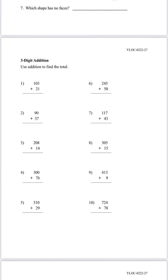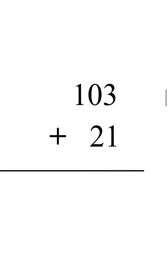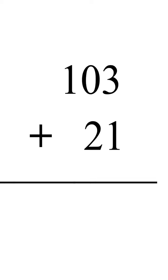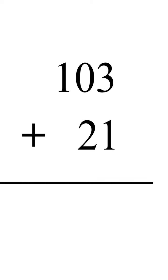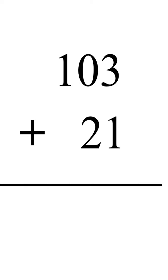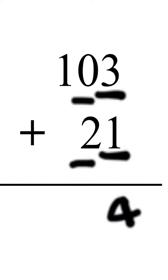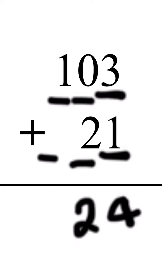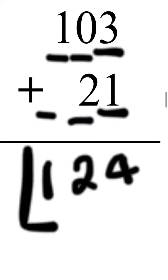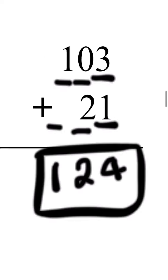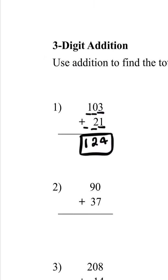For this part we have three-digit numbers and we need to use addition to find the total. Let's look at number one — we need to first add the numbers on the ones place, then the tens place, and so on. Three plus one is four, zero plus two is two, and one plus zero is one, so 124 is the answer for number one.